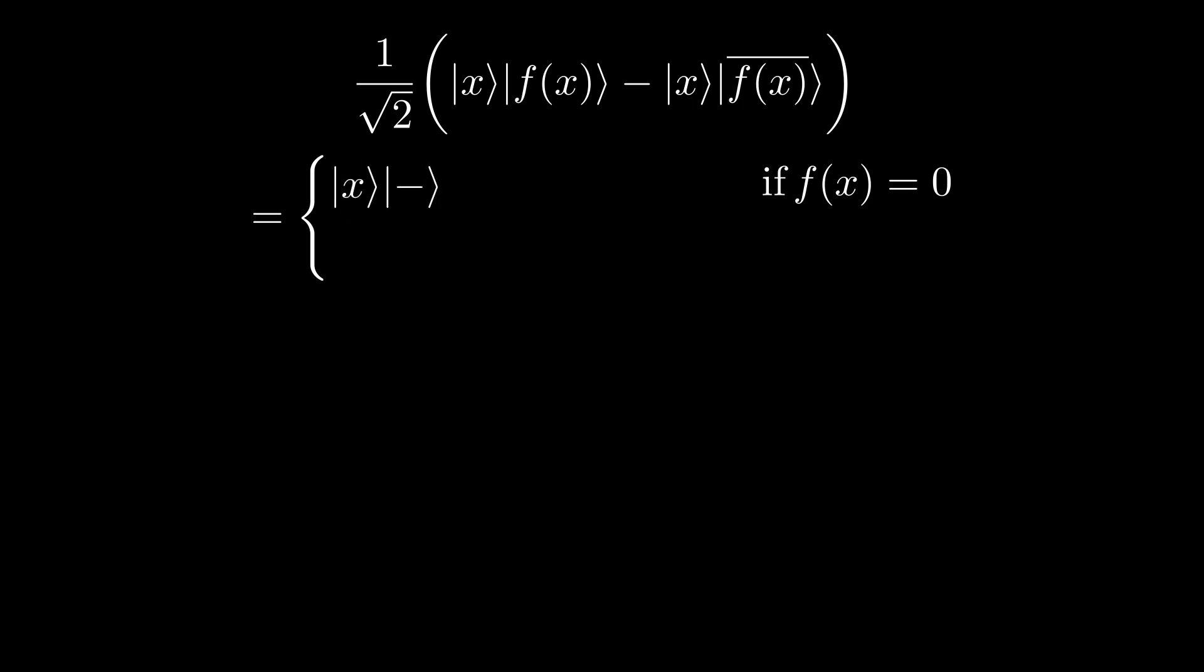On the other hand, if f of x is equal to 1, then the state becomes 1 over root 2 times x 1 minus x 0. We can factor out the negative one, leaving us with the state negative 1 over root 2 times x 0 minus x 1. This can be further factored into negative x minus.